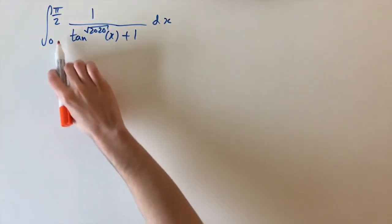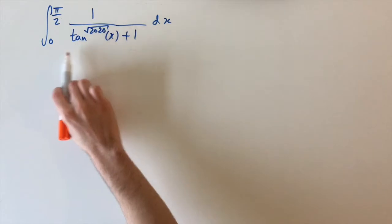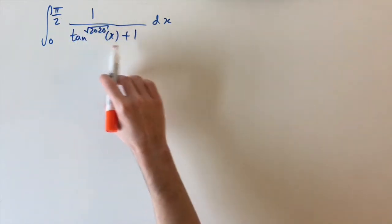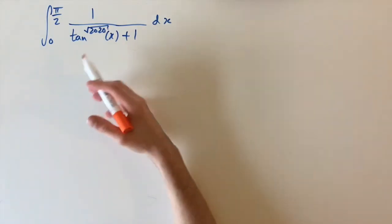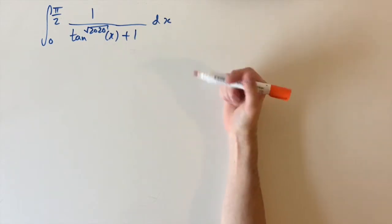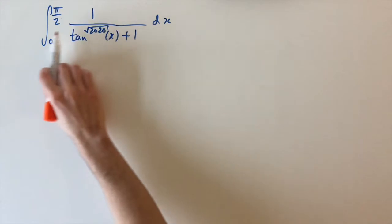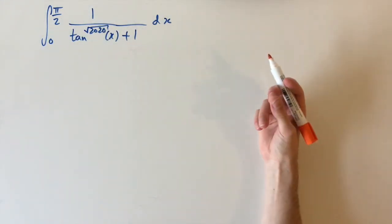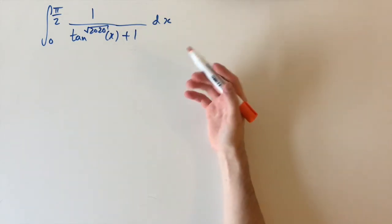We have the integral between zero and pi over two of one divided by tan of x to the power of the square root of 2020, plus one dx. Now this is actually a really hard integral. We can't use a u substitution — there isn't an easy and obvious way to do this. We're going to use a strategy which is essentially to try and rewrite this integral in terms of itself with some other constants, and that allows us to not have to evaluate this integral directly.